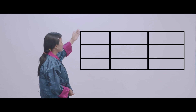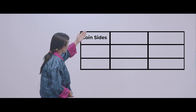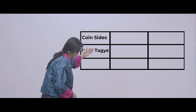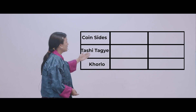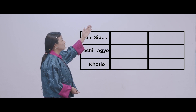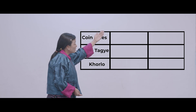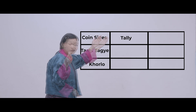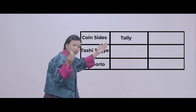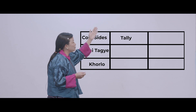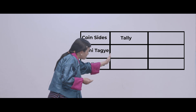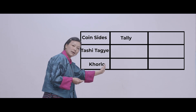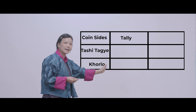First column is 'coin side' — below you will write tashy dhage and khorlo. Second column is the tally mark. If you get a khorlo, you will put a mark on the khorlo row. And if you get a tashy dhage, you will put a mark on the tashy dhage row.